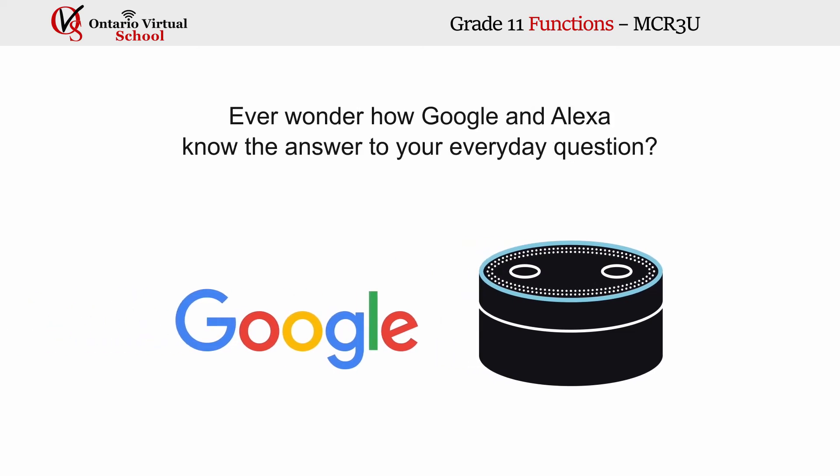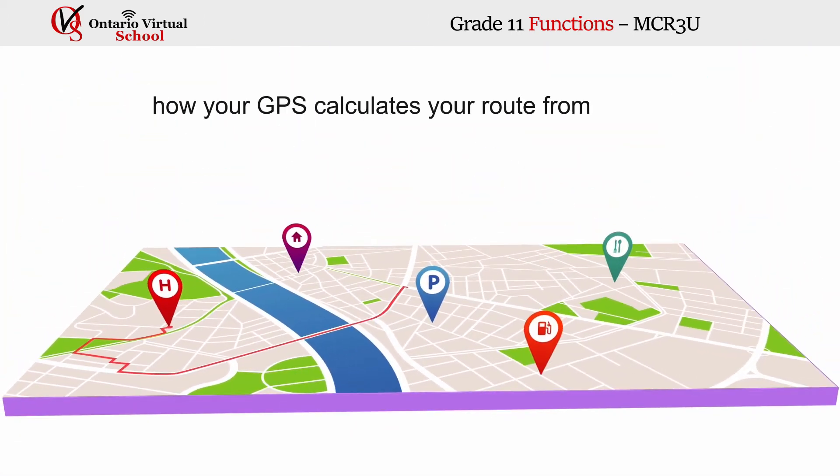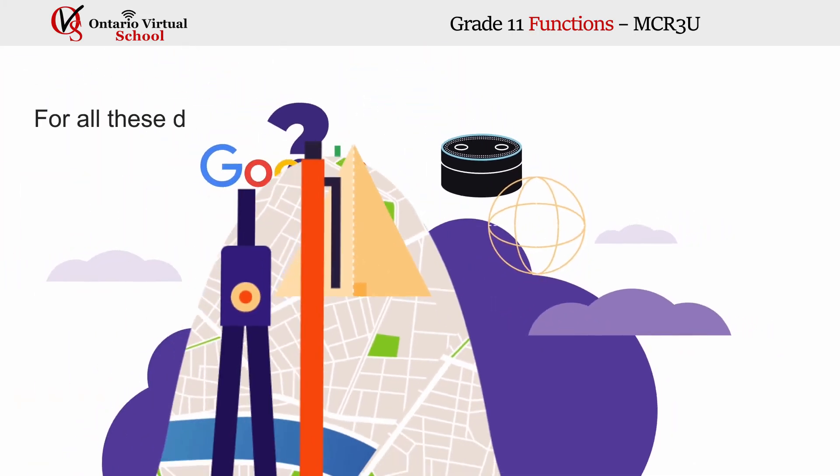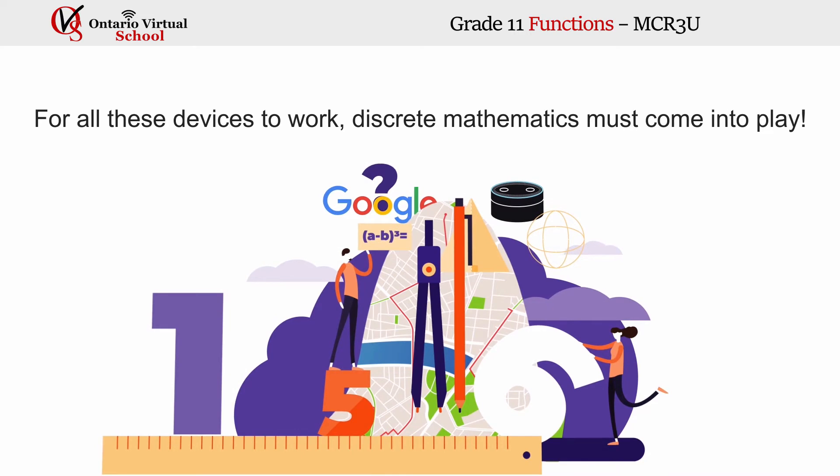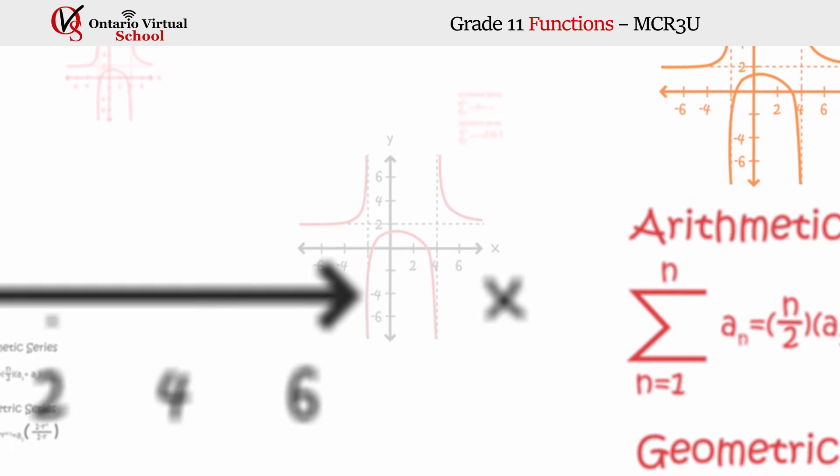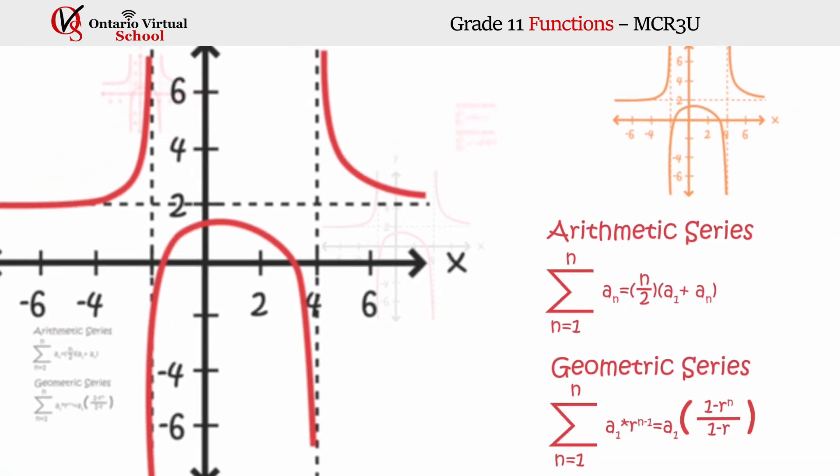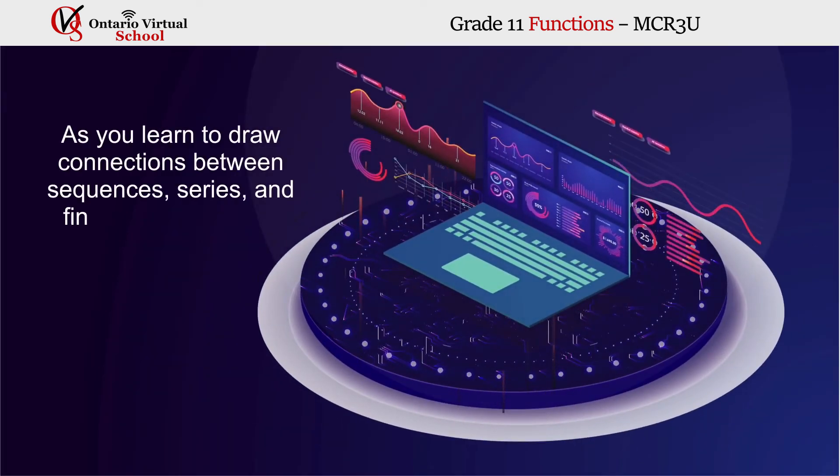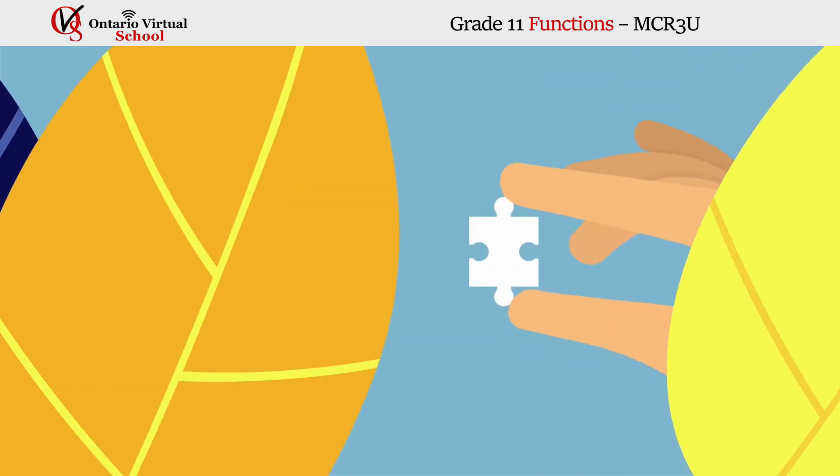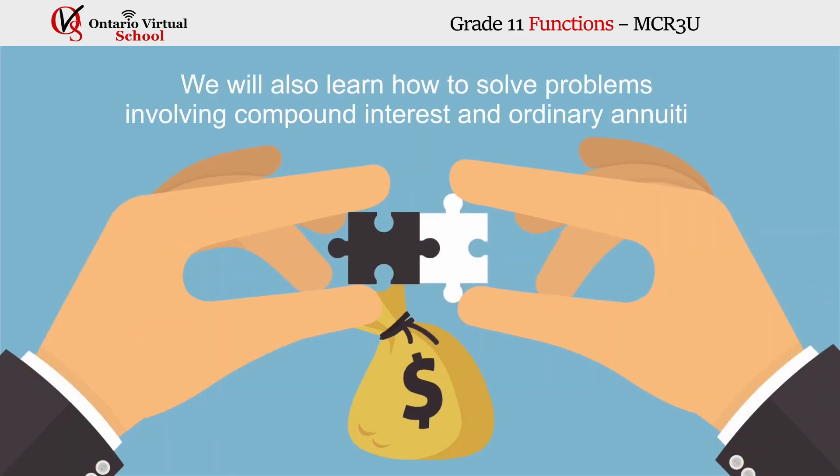Ever wonder how Google and Alexa know the answer to your everyday question, or how your GPS calculates your route from A to B in less time than it takes you to type your request in? Well, for all these devices to work, discrete mathematics must come into play. In this unit, you will be introduced to relationships involved in arithmetic and geometric sequences and series as you learn to draw connections between sequences, series, and financial applications. And for very practical future use, we will also learn how to solve problems involving compound interest and ordinary annuities.